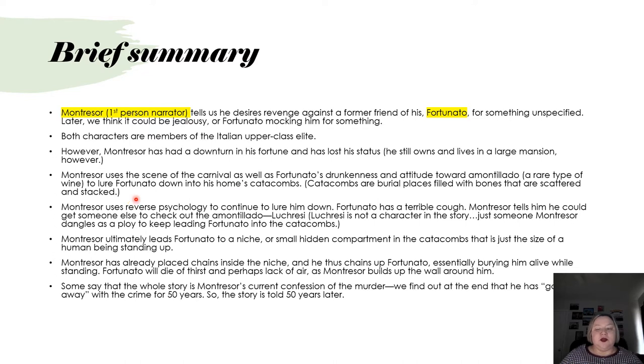So, Fortunato is drunk. Montresor uses reverse psychology to continue to lure him down into the catacombs. Fortunato has a terrible cough. Montresor tells him he could get someone else to check out the Amontillado, a person called Lucrece. Now, Lucrece is not a character in the story. He's just someone Montresor dangles as a ploy to keep leading Fortunato into the catacombs, because Fortunato is so arrogant to believe that he knows better than Lucrece, and so he will continue. Montresor knows this, and so he uses that reverse psychology to lead him forward.